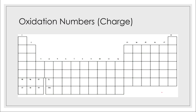Let's label our blank periodic table. All elements in group one will have an oxidation number of plus one. All elements in group two, plus two. Group thirteen, plus three. Then over to our non-metals: minus one, minus two, minus three. Notice I highlighted the particular elements you have to know. This stops here because underneath them are metalloids — I'm only interested in the non-metals right now since only they have these particular charges.